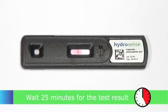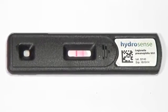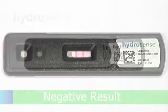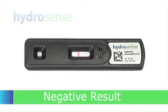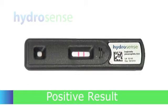The HydroSense strip will show either one or two red lines in the test window. A single line indicates a negative result. If the HydroSense test strip shows two lines, then this is a positive result.